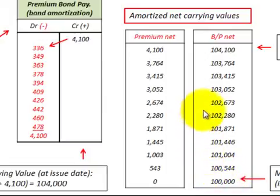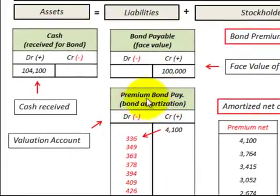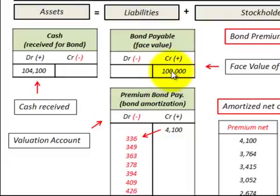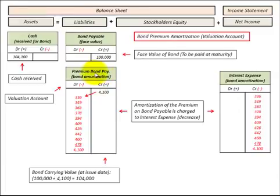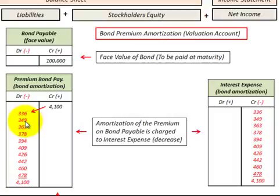You can see how this premium works — it took the initial cash amount of $104,000 and transformed our bonds payable into $100,000 at the maturity date. That's how the valuation accounts work, similar to a contra account, except debits and credits have the same meaning. We actually reduced our liability by taking this $4,100 credit amount and amortizing it down until at maturity of the bond we had zeroed it out.